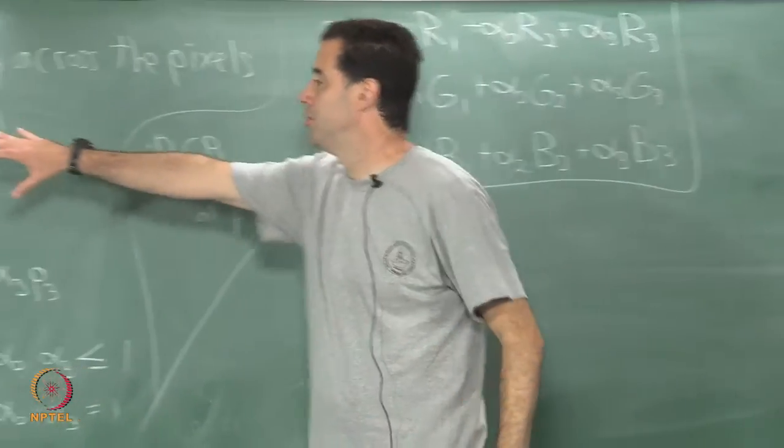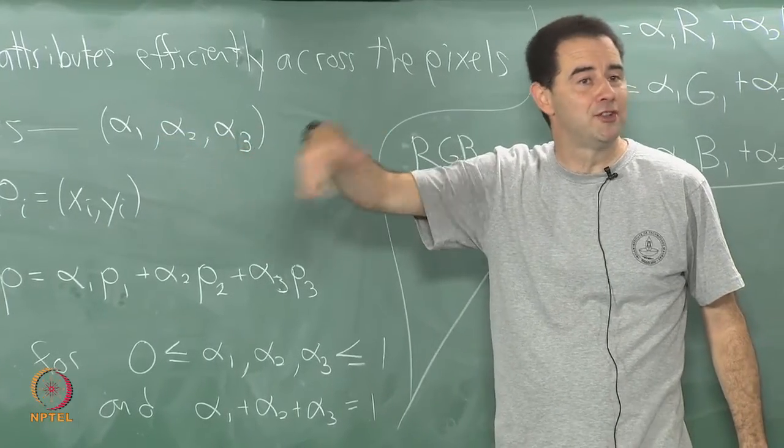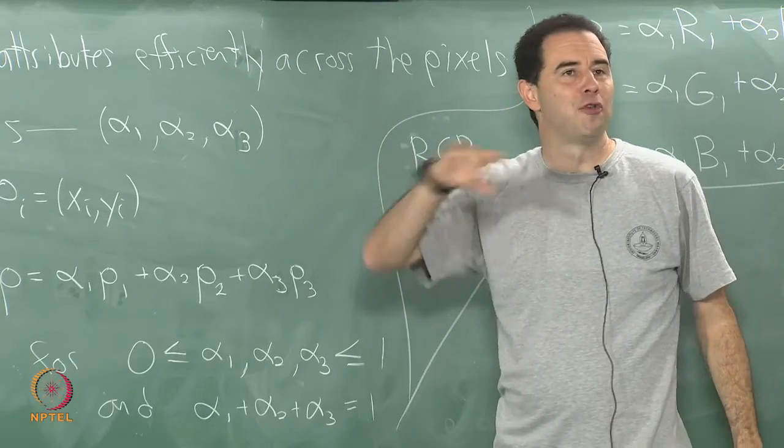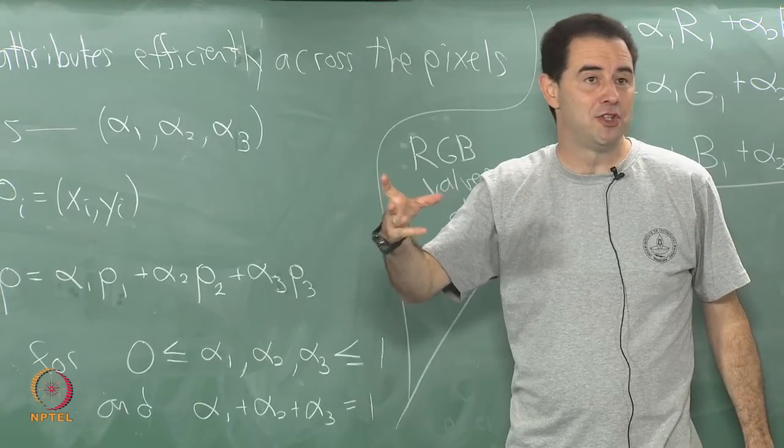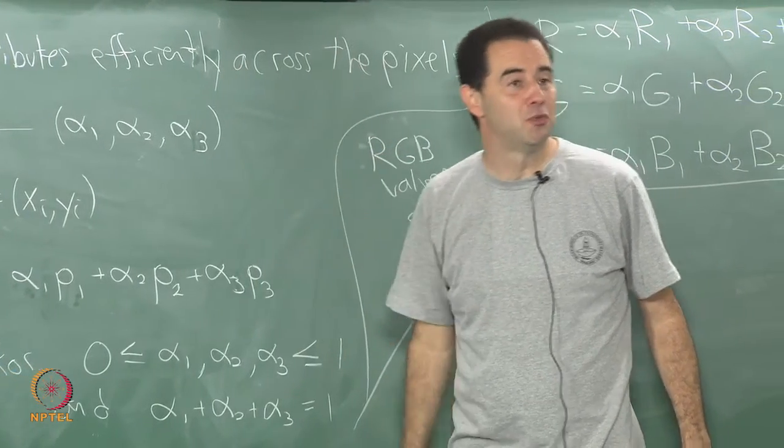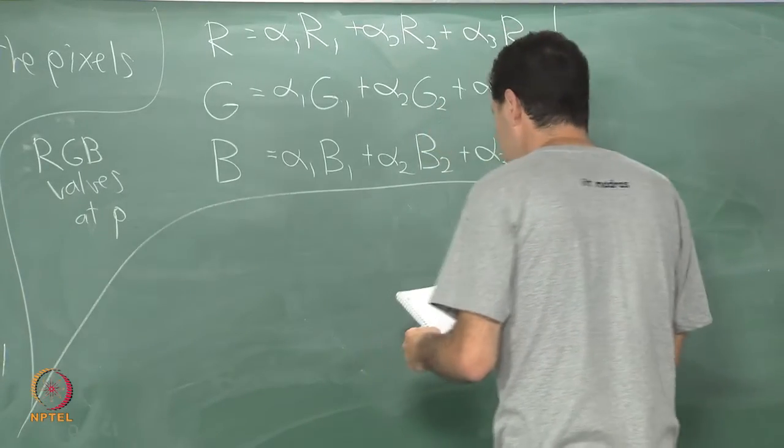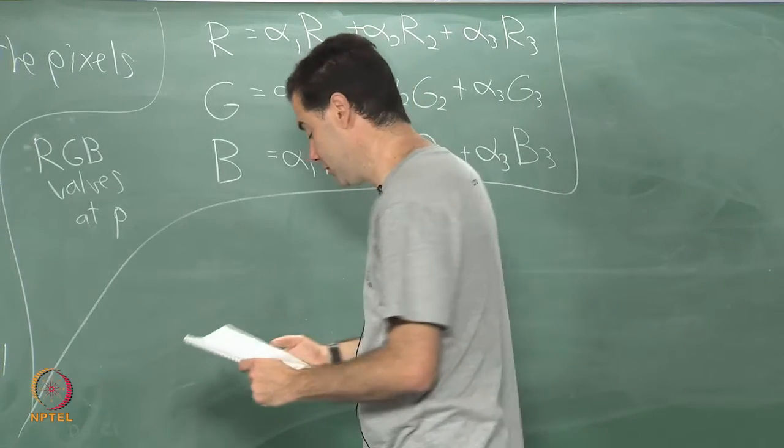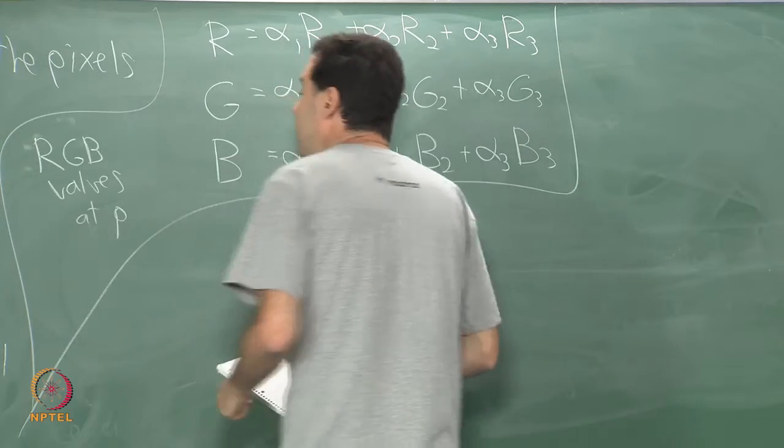Just remember barycentric coordinates is a very convenient way to do interpolation over triangles. One dimension higher you can interpolate over a three dimensional volume using four points which ends up forming a tetrahedron of some kind and it works in higher dimensions as well. It is a very powerful idea, very practical for a lot of engineering applications, finite element methods and all sorts of things.